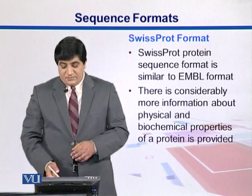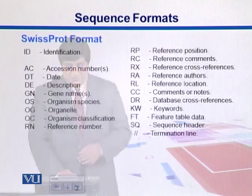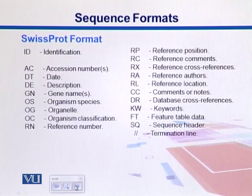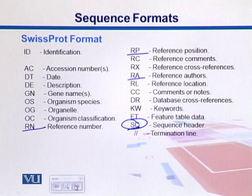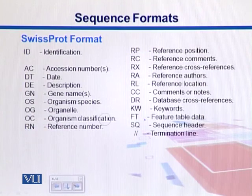Swiss-Prot is similar to EMBL except there are more description fields. For example, we have RP for reference position, RN for reference number, and RA for reference authors who submitted the entry. Sequences also start with SQ and terminate with a double-slash line.